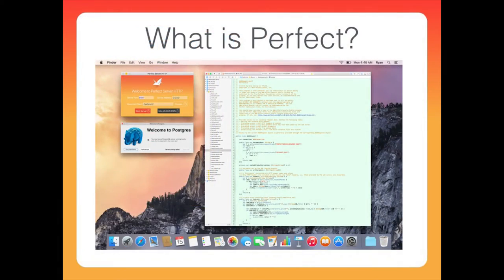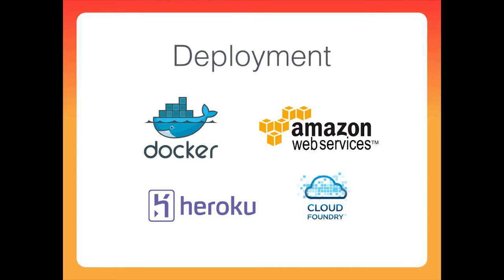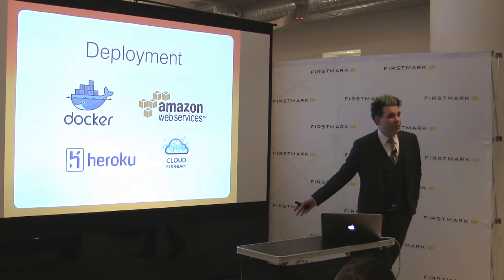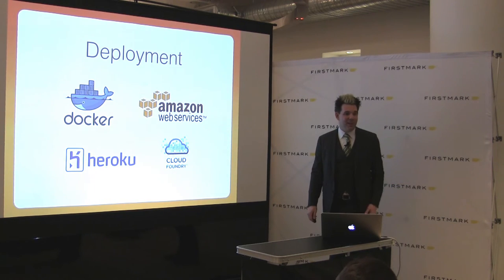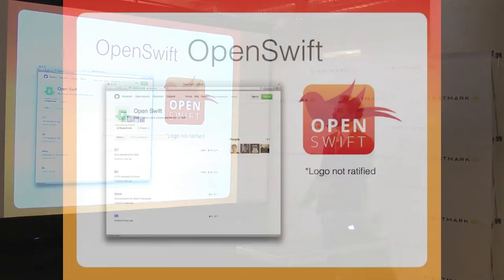The idea is that in the future you use Xcode or whatever IDE, and instead of flipping back and forth between front-end and back-end IDEs, you use one IDE with a server you can quickly spin up, a data source, and all the pieces you need. We also have the ability to deploy today on Docker, Amazon, and Heroku. We're working with Pivotal to put it on Cloud Foundry within the next couple of weeks, as well as Bluemix — so you can take your code and deploy it anywhere simply and easily.